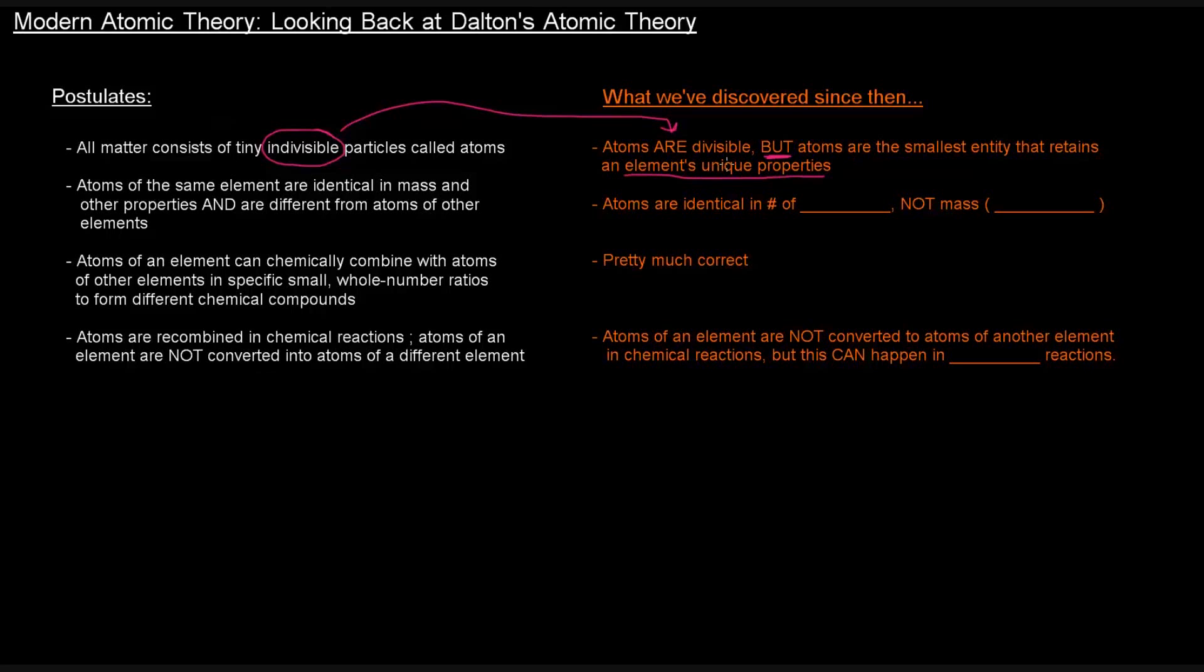They might differ in number and amount from atom to atom, but each electron is the same, each proton is the same. But atoms are the smallest things that have particular unique properties. Like an atom of oxygen is different than an atom of gold. So he was close there, but not quite right about the indivisible situation.